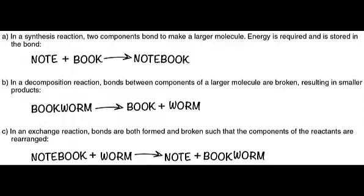In the first example, a nitrogen atom and three hydrogen atoms bond to form a compound. This anabolic reaction requires energy, which is then stored within the compound's bonds. Such reactions are referred to as synthesis reactions. A synthesis reaction is a chemical reaction that results in the joining of components that were formerly separated. Nitrogen and hydrogen are reactants in a synthesis reaction that yields ammonia as the product. The general equation for a synthesis reaction is A + B → AB.